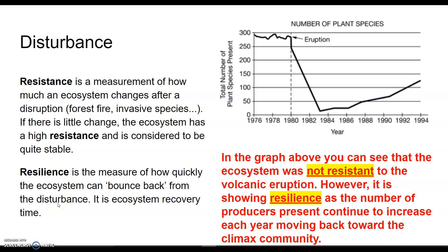Resilience is a measure of how quickly the ecosystem can recover following a disturbance. For example, in 1980 there was a volcanic eruption; the area had a very high number of plant species before the eruption, which declined greatly afterward — almost like secondary succession. Then the numbers began to increase again. The ecosystem was not resistant to the eruption, but it does show resilience as producers continue to increase each year from 1983 and 1984 onward, moving back toward the climax community.